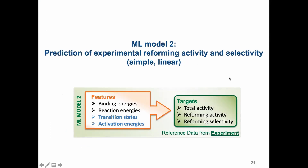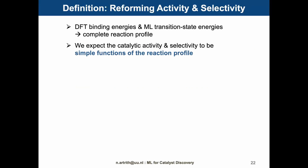Using machine learning model one, we could generate a large database of transition state energies. These energies are now entered as features into the second machine learning model. The second machine learning model is trained to predict the experimental reforming activity and selectivities. The dataset is small, so the machine learning model has to be simple — we use a linear model. With DFT adsorption energies and machine learning transition state energies, we now have complete reaction profiles. We expect that the reforming activities and selectivity are simple functions of the reaction profile. We define the activities and selectivity based on three competing reactions shown earlier.